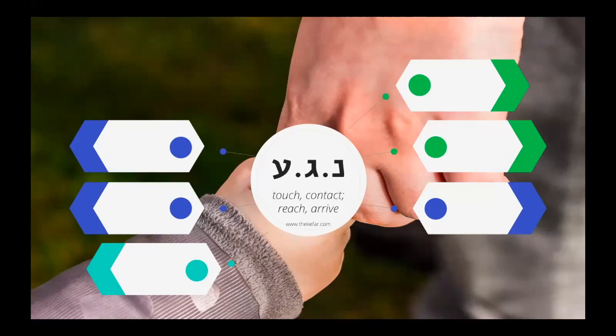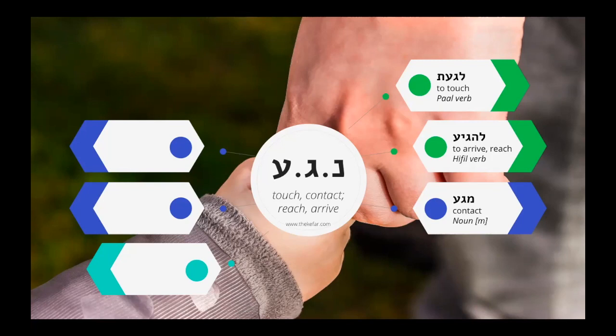So let's look at some examples. We have the pa'al verb laga'at, which means to touch. And we have the hif'il verb lehagiyah, and lehagiyah is to reach or to arrive. There's the masculine noun maga, which is a contact or a touch.